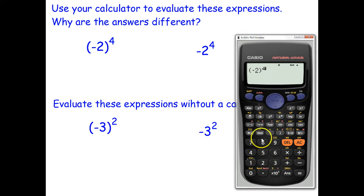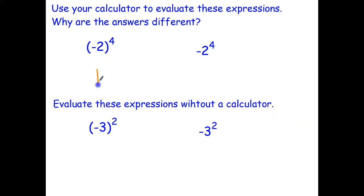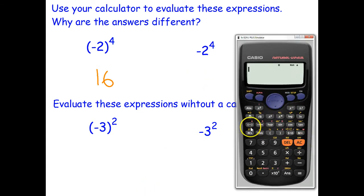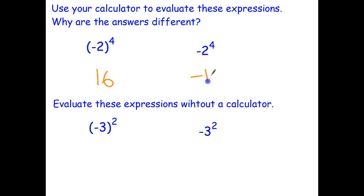So that's negative 2 times negative 2 times negative 2 times negative 2. Based on what we did on the previous page, you can probably guess it's going to be a positive answer — the answer is positive 16. Now what about if I do the same question but without the brackets? Negative 2 raised to the power of 4. That turns out to be negative 16. Why are we getting different answers? It all has to do with order of operations. This question with brackets says raise negative 2 to the power of 4, which will give us a positive answer.